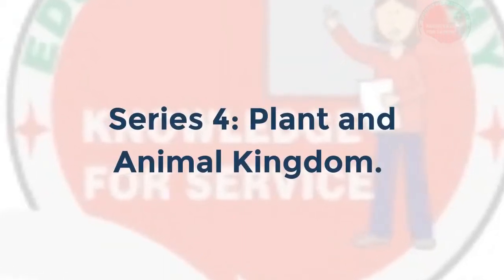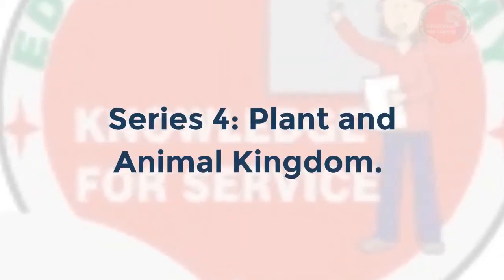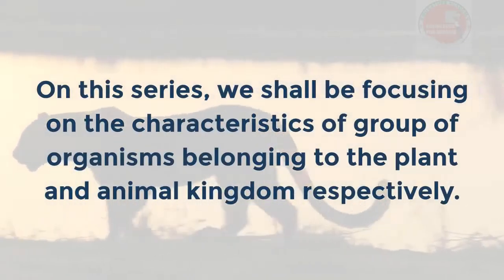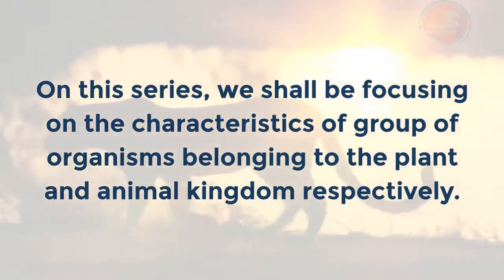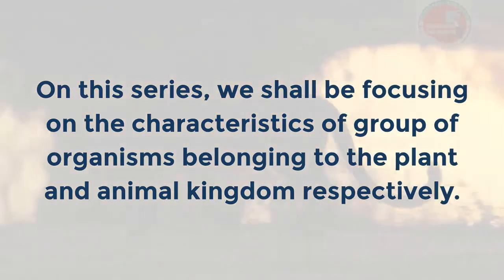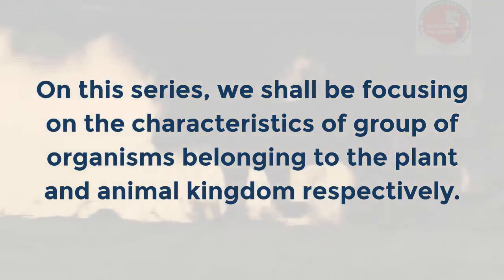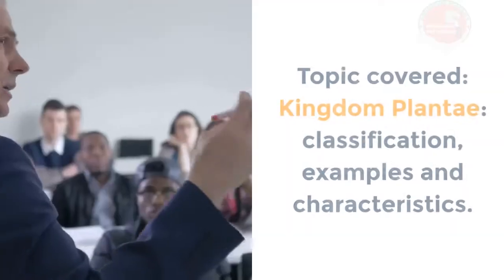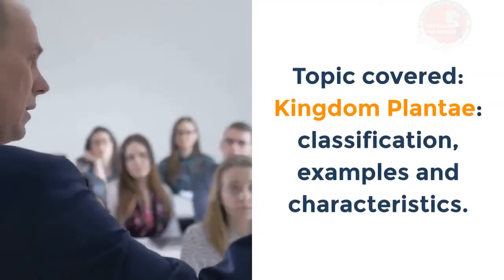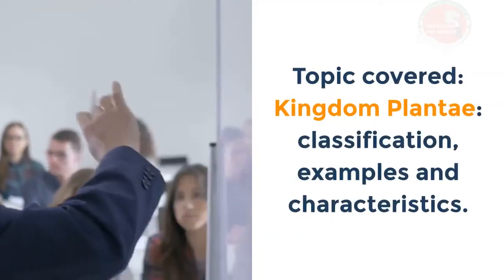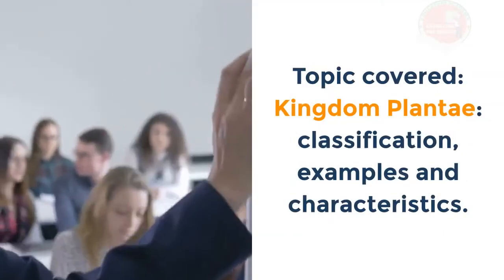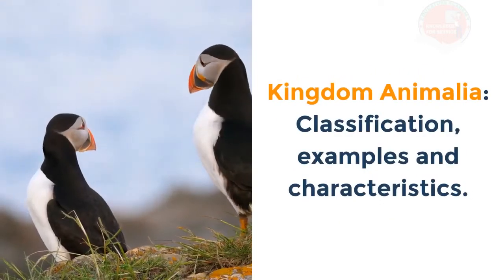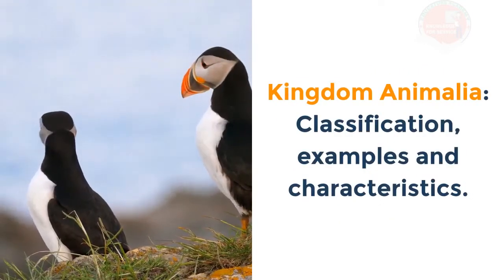Series 4: Plant and Animal Kingdom. In this series we shall be focusing on the characteristics of groups of organisms belonging to the plant and animal kingdom respectively. Topics covered include Kingdom Plantae classification, examples and characteristics, and Kingdom Animalia classification, examples and characteristics.